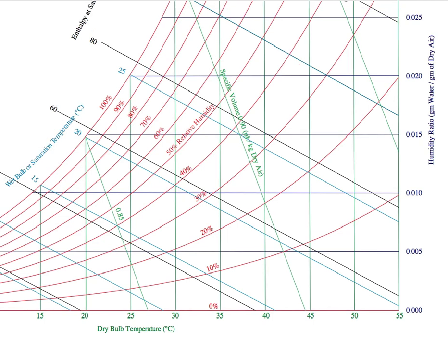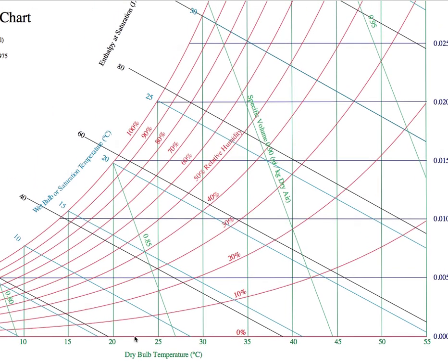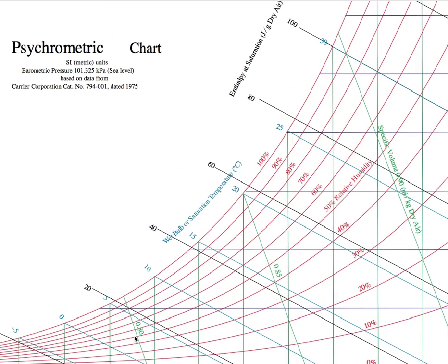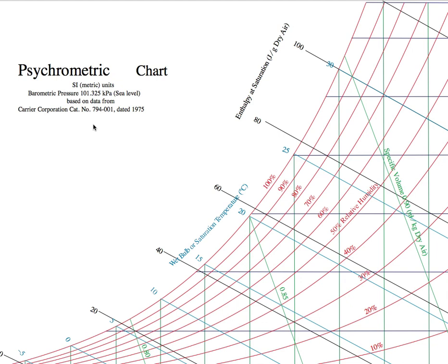I also need to note that every psychrometric chart is given for a particular barometric pressure. For example, this chart is made for a barometric pressure of one atmosphere, which is 101.325 kilopascal, and this is the standard atmospheric pressure at sea level.